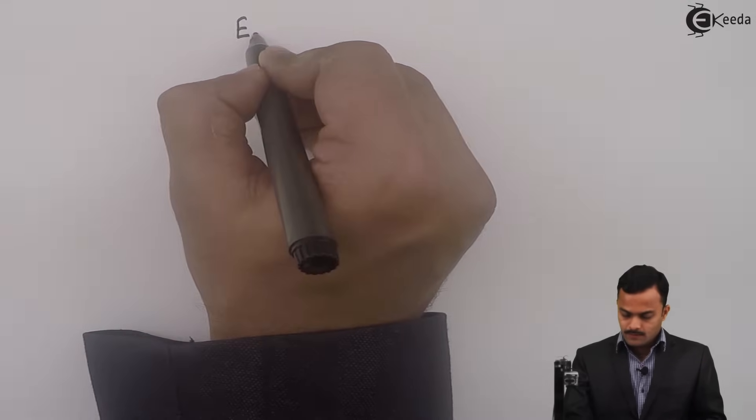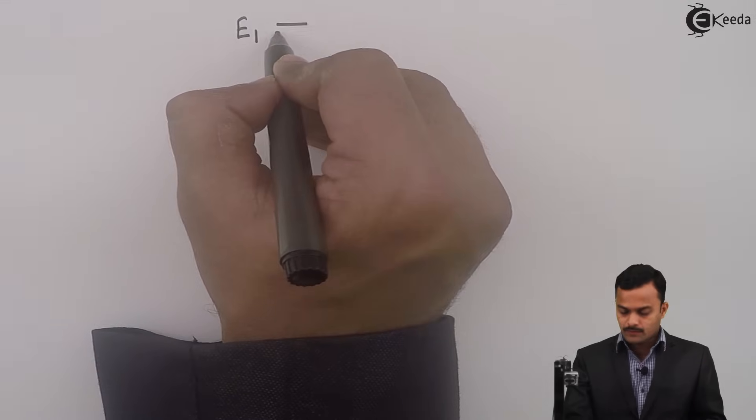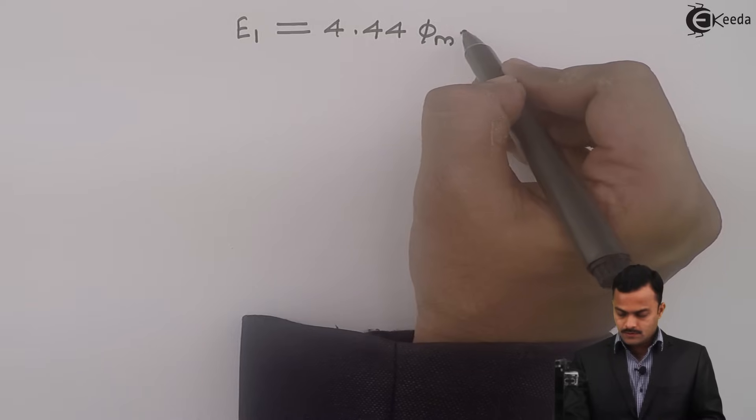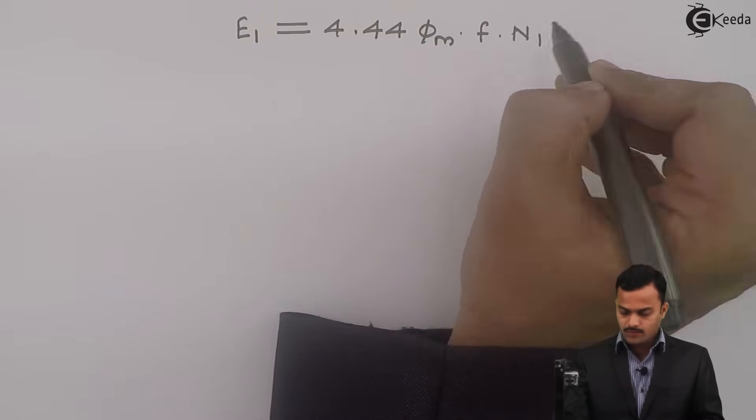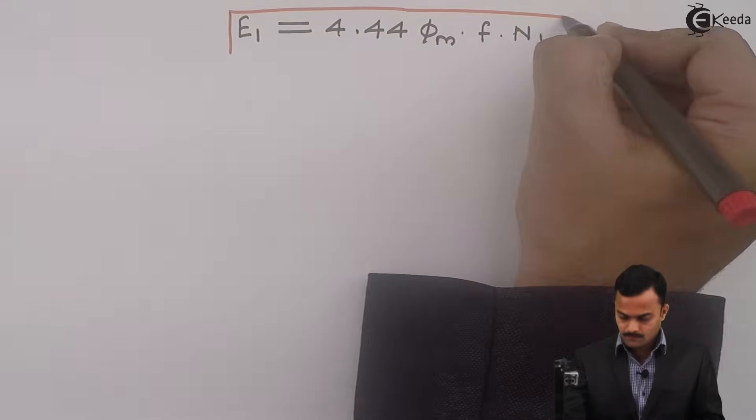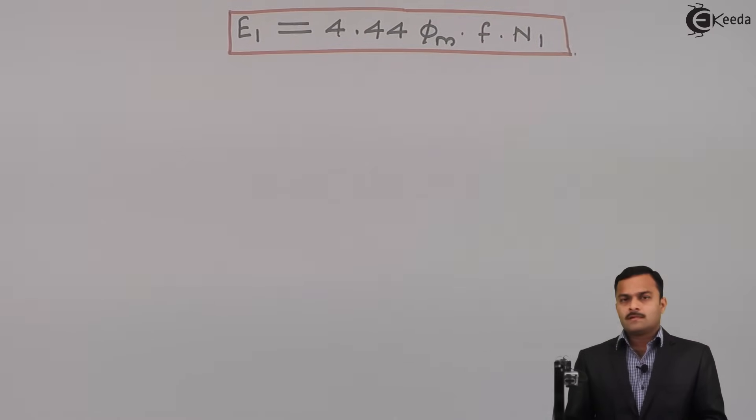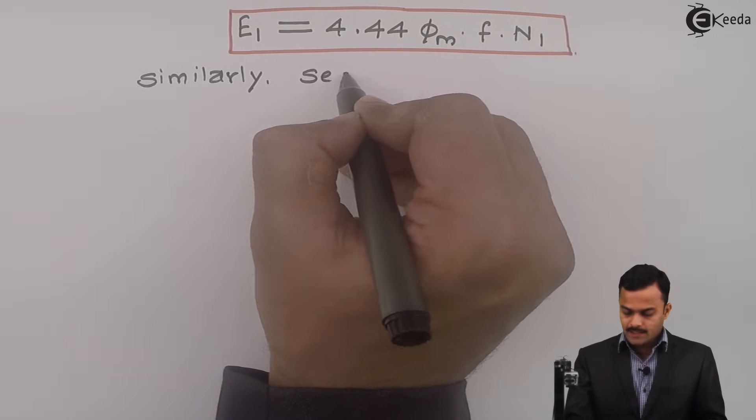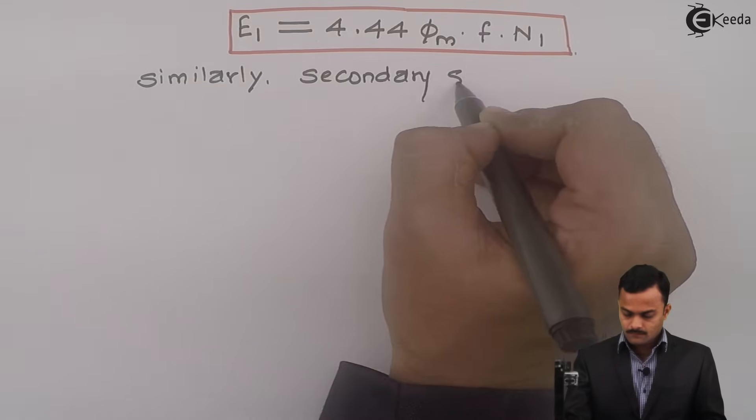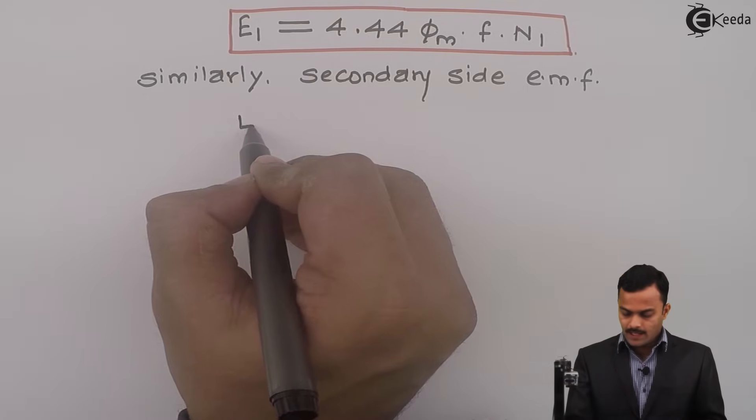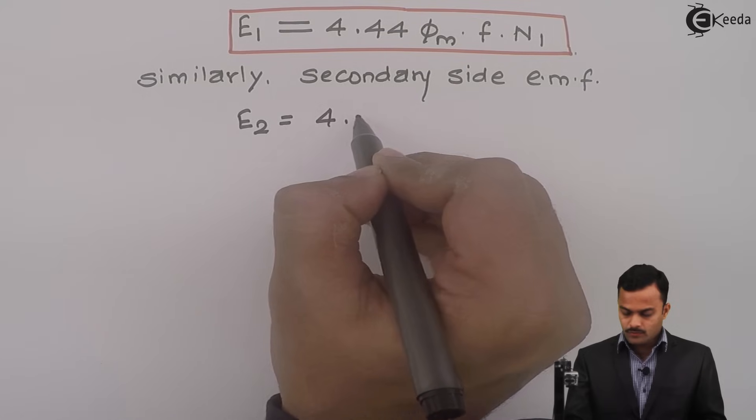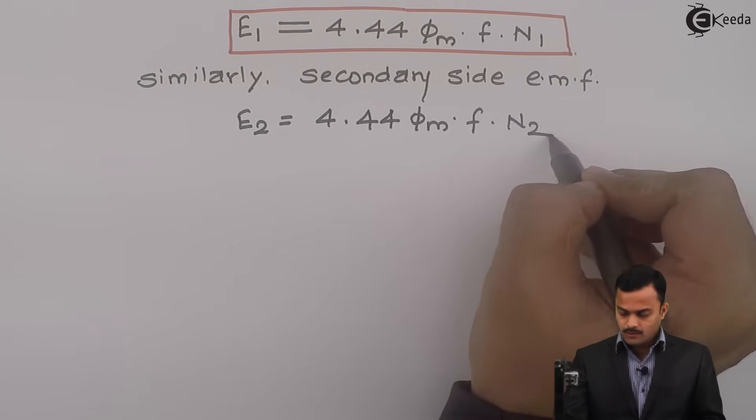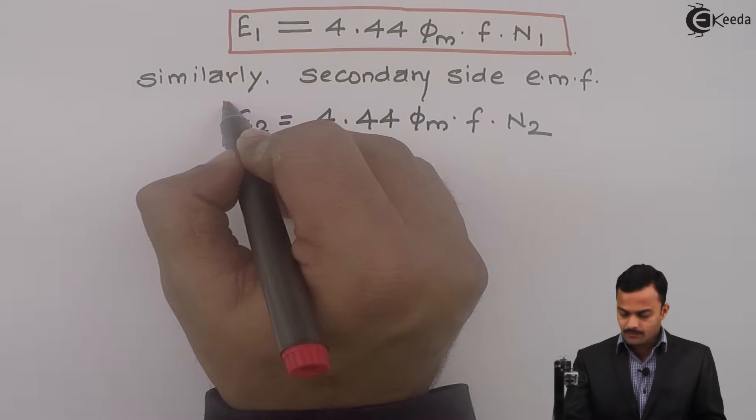Finally, what I can say: primary EMF induced RMS value is 4.44 phi m into frequency into number of primary turns. Similarly, secondary side EMF can be considered as 4.44 phi m into f into n2 because that will depend only on secondary number of turns.